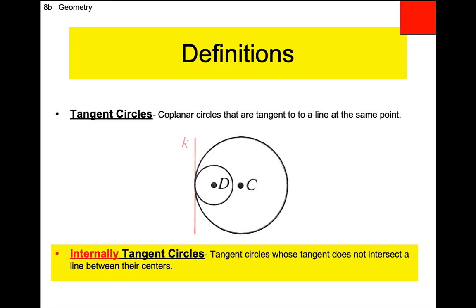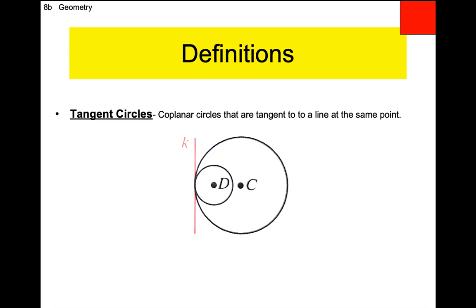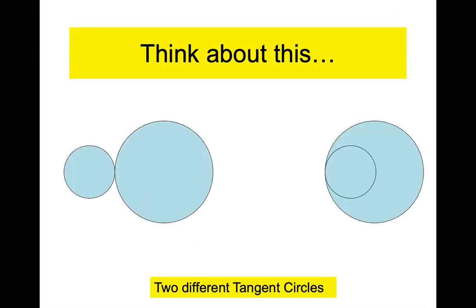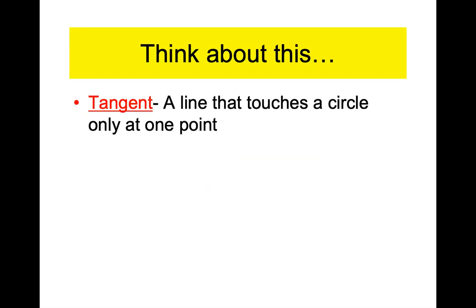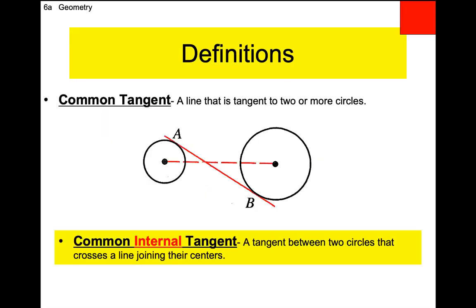If you notice, all four words have the word 'tangent' in them. Two of the four have 'internally,' two have 'external,' two have 'common.' Those four words can get really jumbled in your head, which is why you put them in your book of truth. Shame on you if you get these wrong come test day, because it's in your book of truth. The big deal is you've got to remember the words to describe the picture. So does your book of truth have the picture for each one? Then you'll be fine.